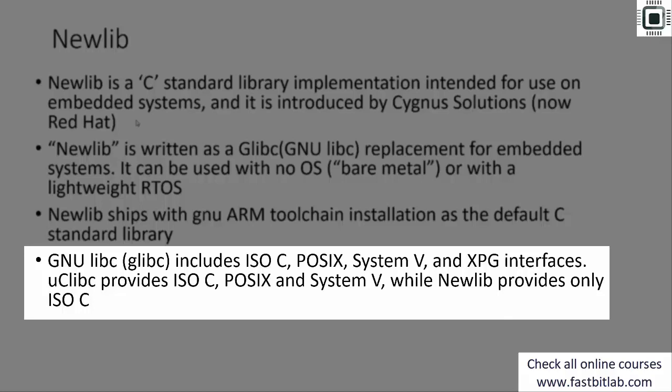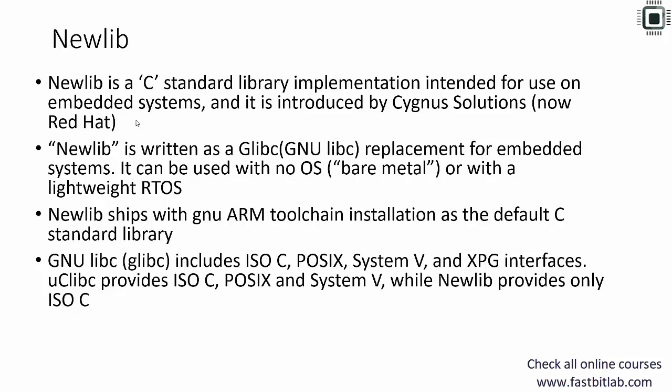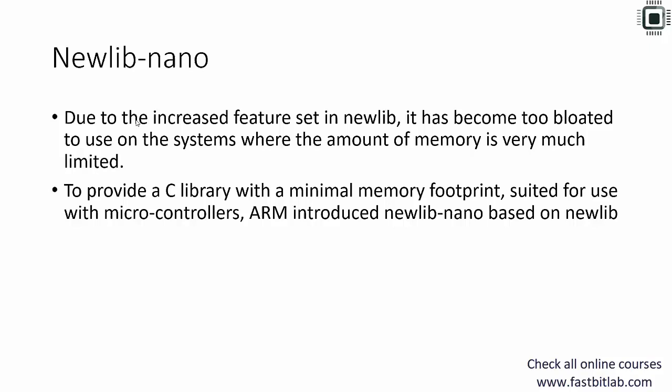glibc includes ISOC, POSIX, SYSTEM5 and XPG interfaces. MicroLibc provides ISOC, POSIX and SYSTEM5 features, while NewLib provides only ISOC. That's the difference between NewLib, MicroLibc and glibc. NewLib comes with less feature sets.